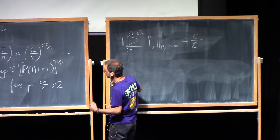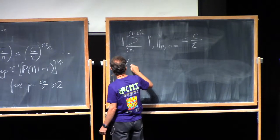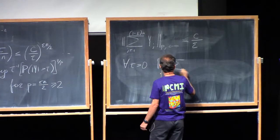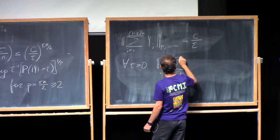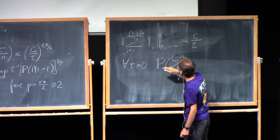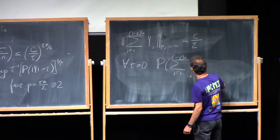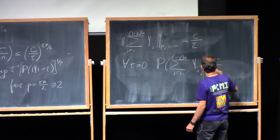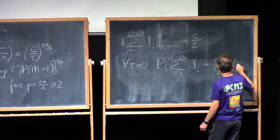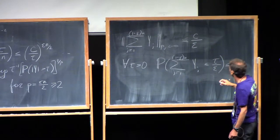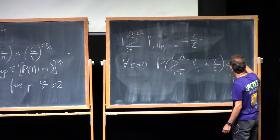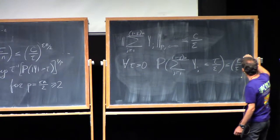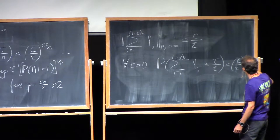Translating it back: for any tau positive, the probability that the sum j from 1 to (1 minus epsilon)n of y_j is less than or equal to tau over epsilon is less than or equal to c over tau to the power epsilon n over 2.